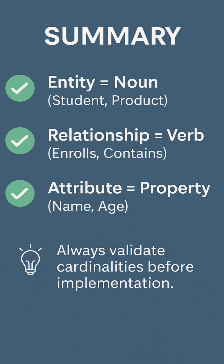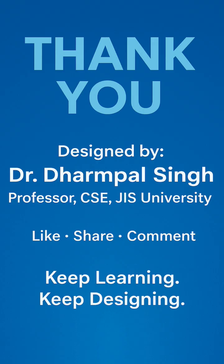Always remember: entity is a noun, relationship is a verb, and attribute is a property. Before implementing your database, always validate the relationships and cardinalities to ensure accuracy.